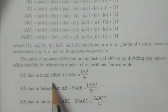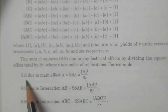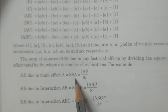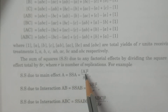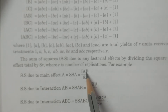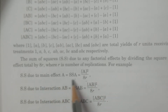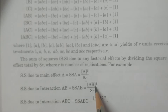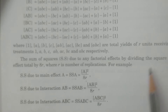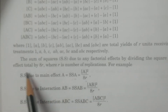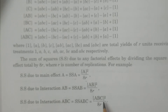For example, the sum of squares due to main effect A is SSA = [A]² / 8R. The sum of squares due to interaction AB is SSAB = [AB]² / 8R. Similarly, SSABC = [ABC]² / 8R — that is, the square of the effect total divided by 8R.